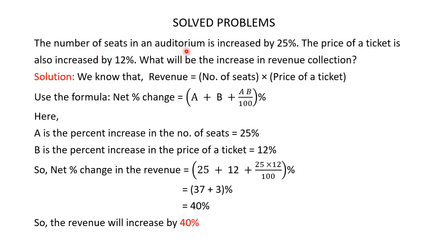Problem: The number of seats in an auditorium is increased by 25 percent. The price of a ticket is also increased by 12 percent. What will be the increase in revenue collection? Revenue is nothing but number of seats multiplied by price of ticket. It is given that the seats are increased by 25 percent and price of ticket is also increased by 12 percent, so we have to find the net percent change.